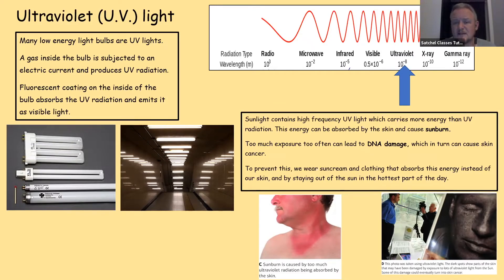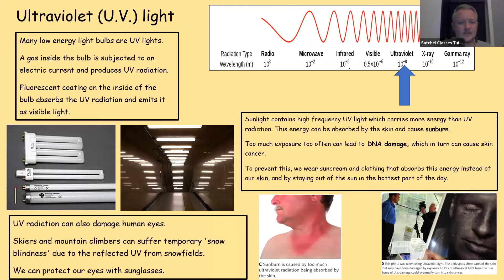Now dangers of it. Sunlight contains high frequency UV light which carries more energy than visible radiation. This energy can often be absorbed by the skin and cause sunburn. Too much exposure too often can lead to DNA damage. Ultraviolet light can penetrate into the skin to the surface layer and that can cause skin cancer because if you damage the DNA it leads to mutations which eventually will lead to cancerous cells forming. To prevent this we wear sun cream because sun cream can absorb the UV light and prevent it from passing through to the skin. We wear clothing that absorbs this energy instead of our skin and we can stay out of the sun in the hottest part of the day to avoid skin damage. UV radiation can also damage human eyes. Skiers and mountain climbers can suffer temporary snow blindness due to reflected UV from snowfields. We protect our eyes with sunglasses. If you have too much sunlight in your eyes it can lead to the formation of cataracts which need surgery to remove them.